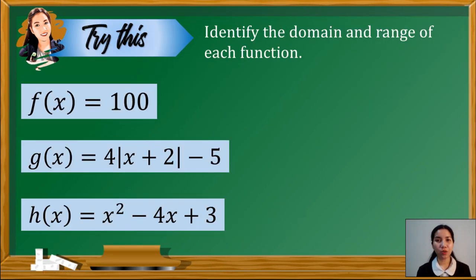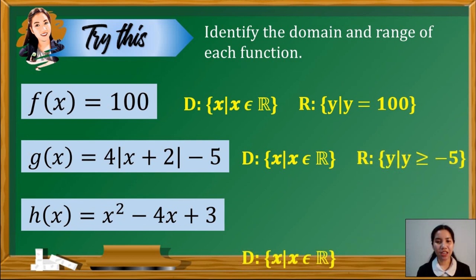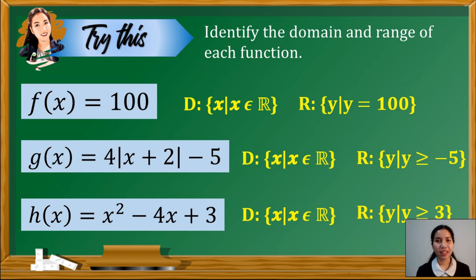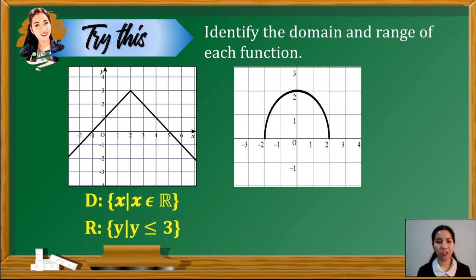At this point, let us check what you have learned from our discussion. You may pause the video to answer the following problems. Let's check our work. Item number 1 — here's the domain and here's the range. Item number 2 — here are the answers. And item number 3 — we have this. Next, let's have the graphs — identify the domain and range. First, we have this domain and range. And on the second, we have this domain and range.